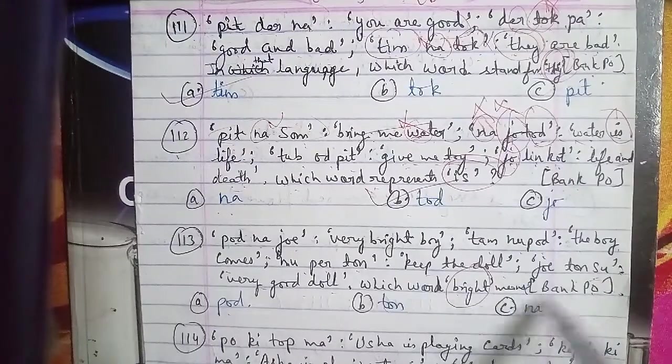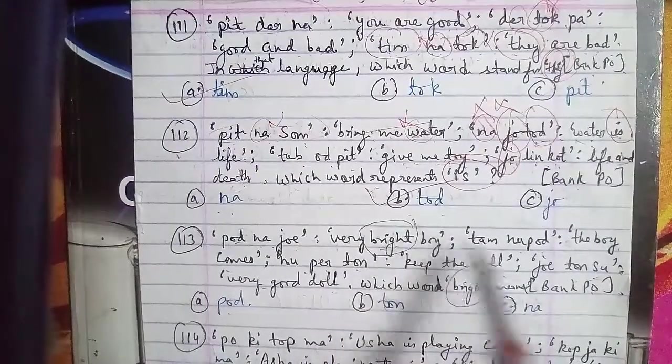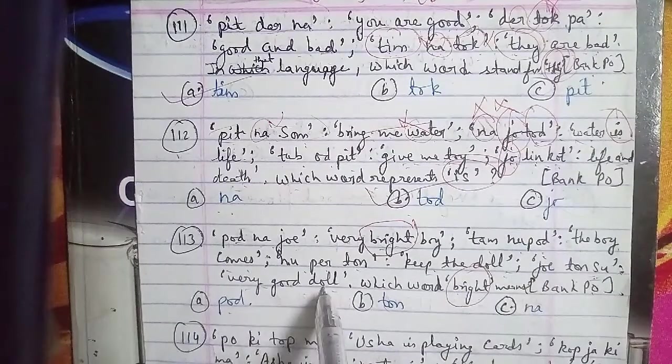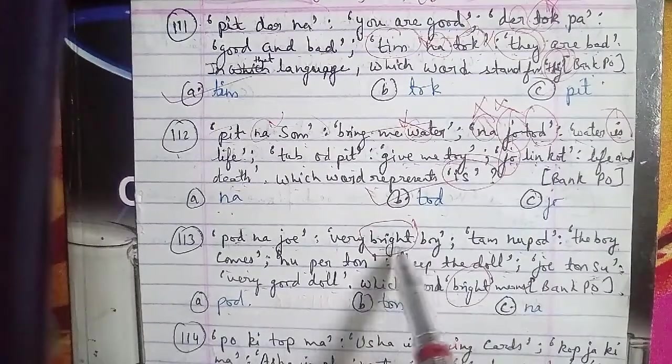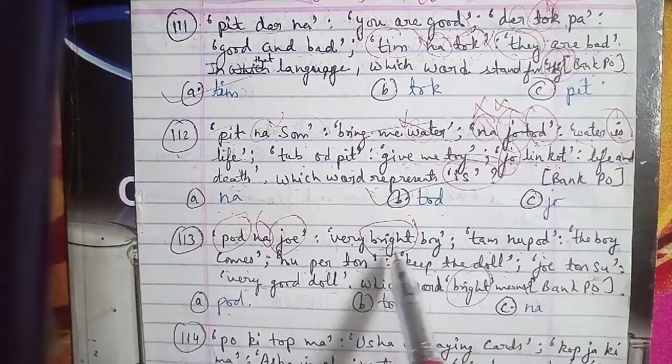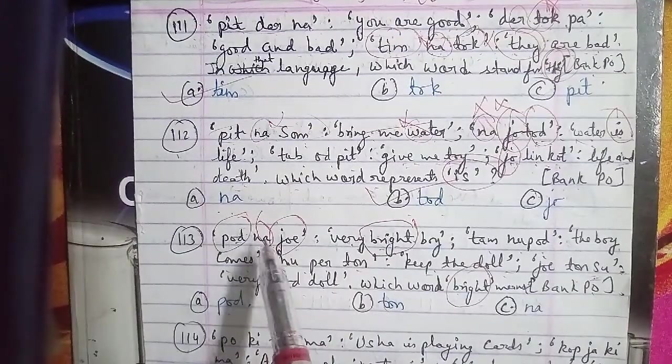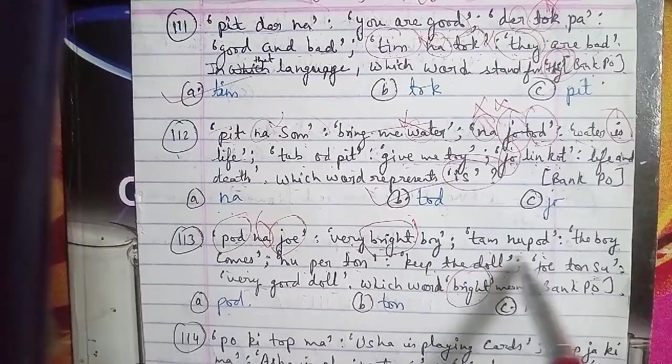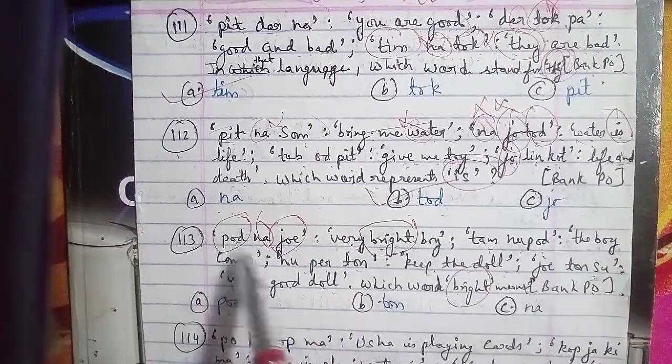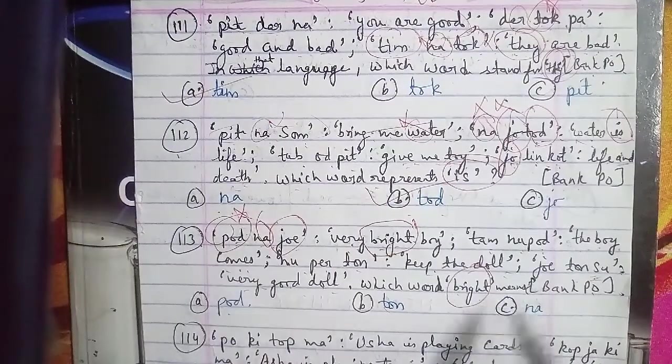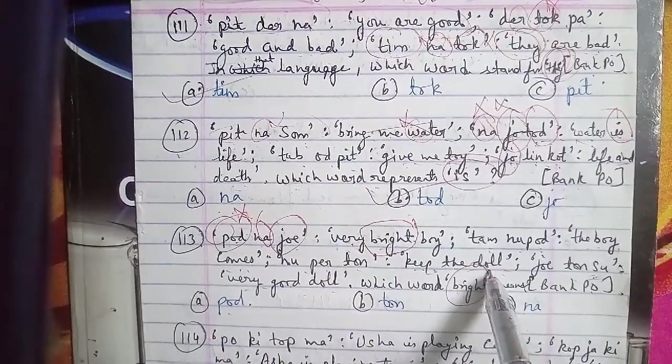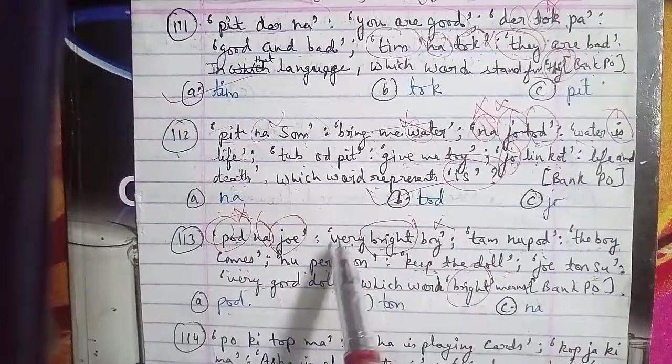Options are A: pod, B: ton, C: na. We need to see where bright appears - it's in 'very bright boy'. So either pod, na, or joy will be the code. Let's check boy - 'the boy comes' is tam nu pod, so pod is coded for boy. For very - 'very good doll' is joy ton su, so joy is coded for very. The answer should be na. So option C is the right answer.